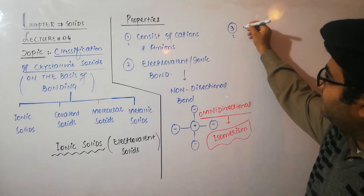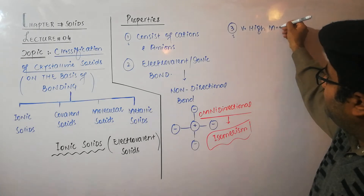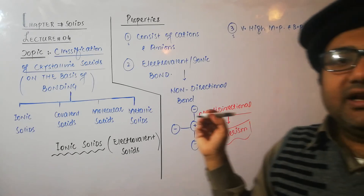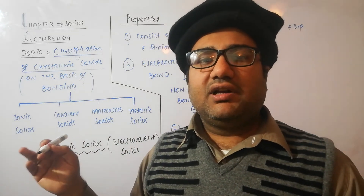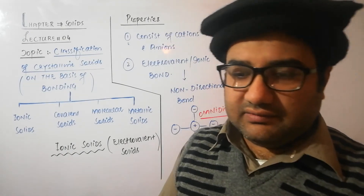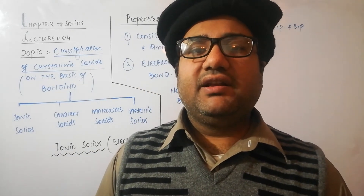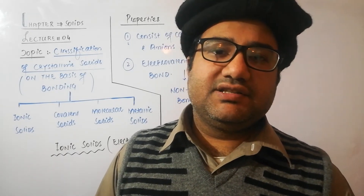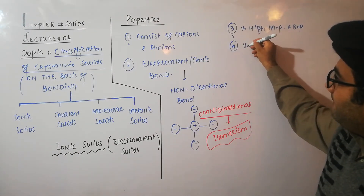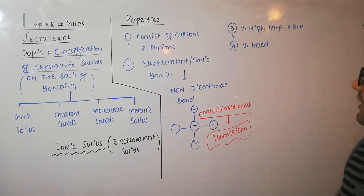Third, ionic solids have very high melting point and boiling point. Their high melting and boiling points are due to the strong ionic bonds that make up the crystal — breaking an ionic bond requires a very high amount of energy. So to break the ionic crystal, you must provide a high amount of energy, which is why they have high melting and boiling points. Fourth, ionic solids are very hard, and again the reason is the strong ionic bonds.